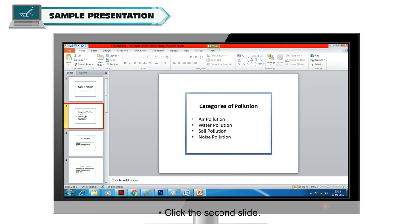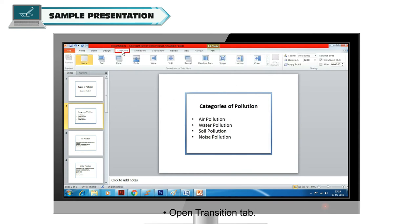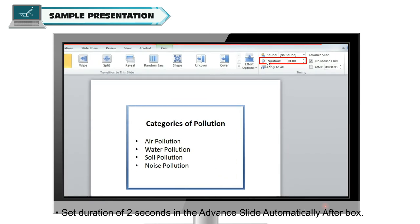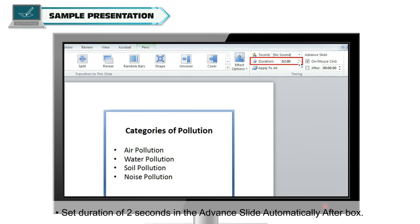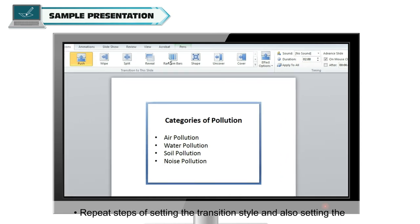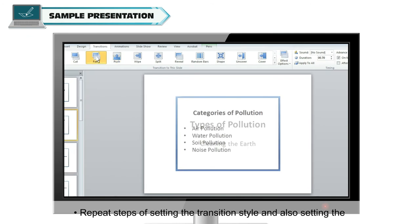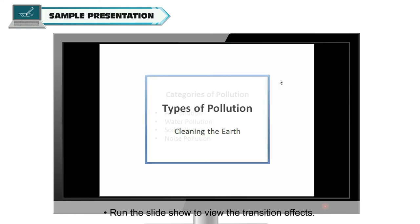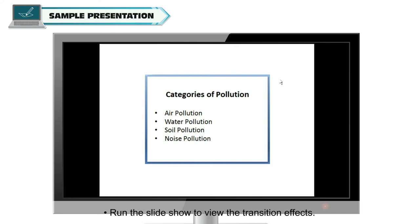Click the second slide and open the Transition tab. Select any transition style from the Transition to This Slide group. Set a duration of two seconds in the Advanced Slide Automatically After box — this will advance your slide automatically after two seconds. Repeat the steps of setting the transition style and duration for each slide, then run the slideshow to view the transition effects.